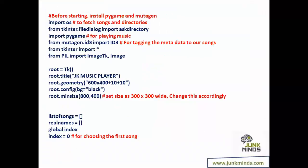For that, we're going to import a lot of stuff. I've started by importing OS, which will help load songs from a directory. From tkinter I'm importing filedialog and askdirectory — so when the user starts the application, I can ask which folder to import songs from. I'm also importing pygame, mutagen, and from PIL importing ImageTk and Image for displaying images.